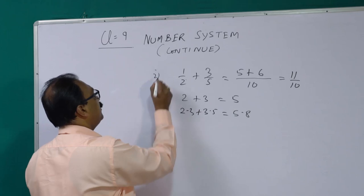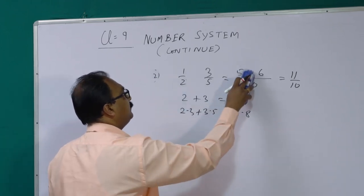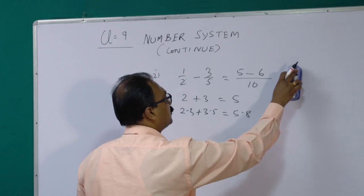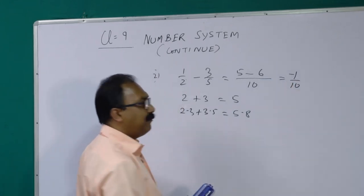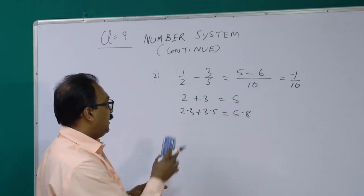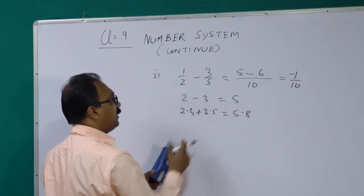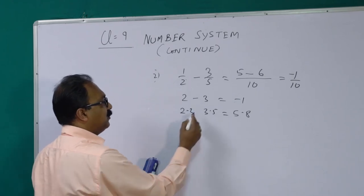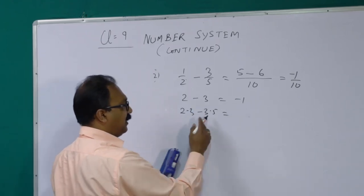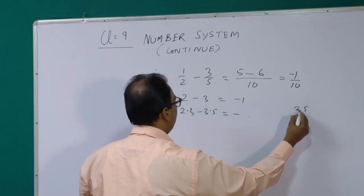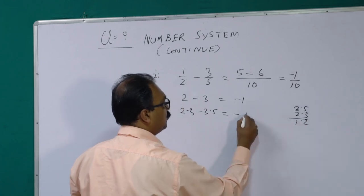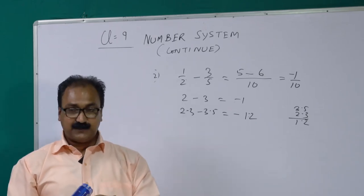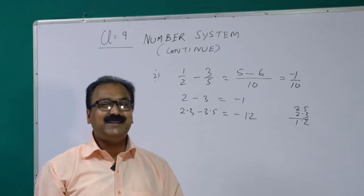Now if we change the operation to subtraction with the same examples: 1/2 − 3/5 gives 5/10 − 6/10 = −1/10, still rational. Similarly, 2 − 3 = −1, rational. And 3.5 − 2.3 = 1.2, which is also a rational number. So the subtraction of two rational numbers is always a rational number.